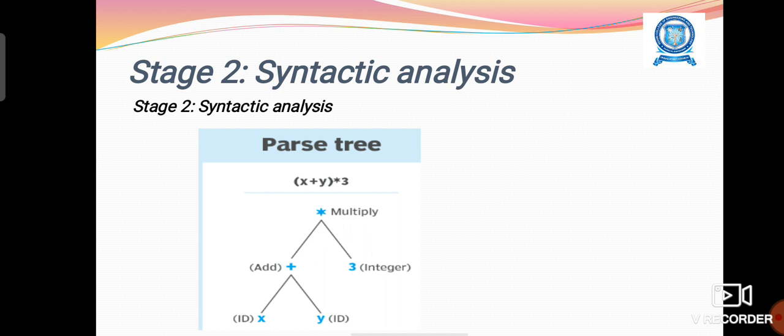We can construct the parse tree for that. First of all, star, multiplication. The two components of the star are addition and the addition part x plus y. Another part is 3. And again, addition consists of two variables x plus y. Add will be expanded into two components x and y. X and y are actually identifiers.